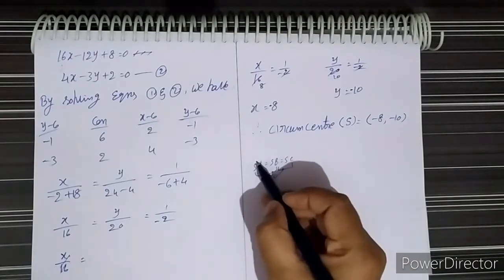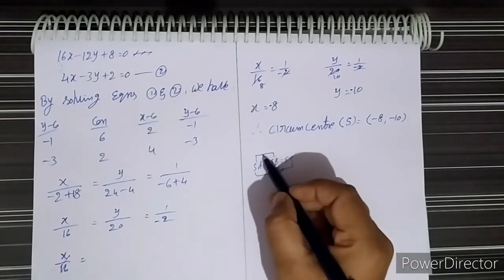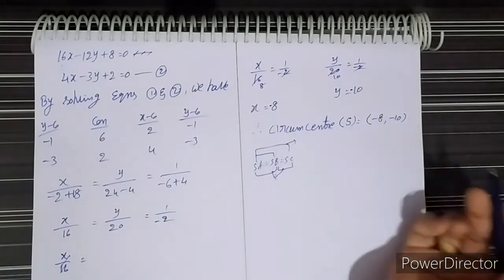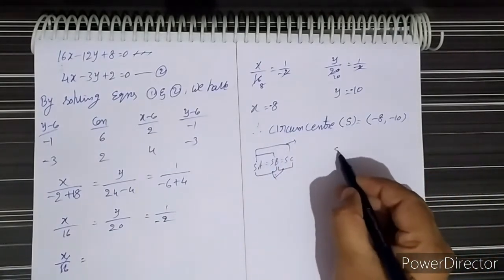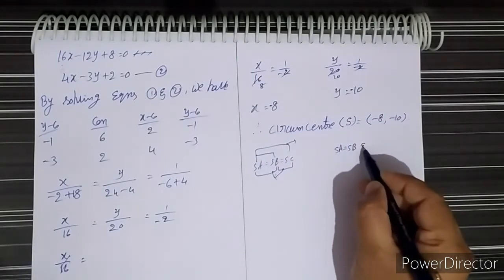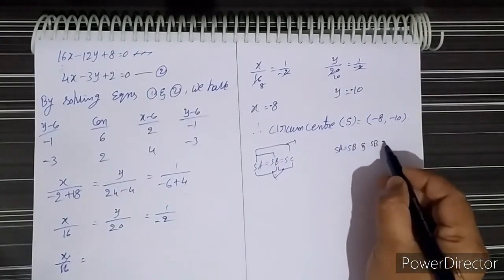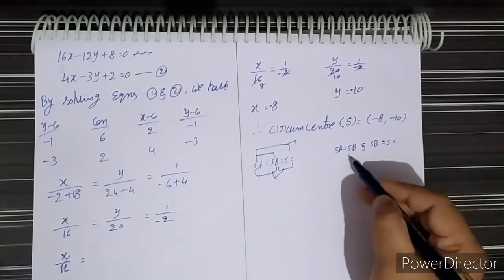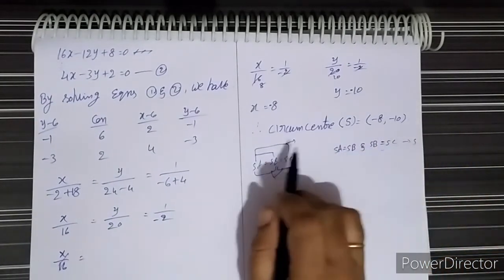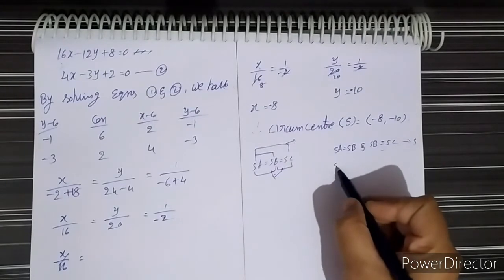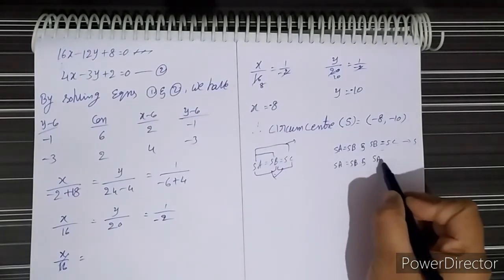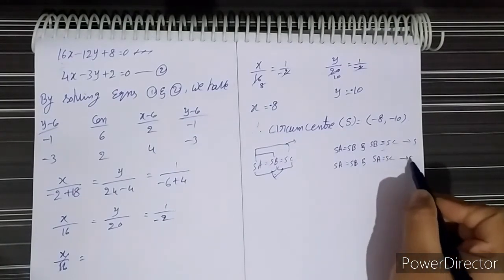We can also find the circumcenter using SA equal to SB and SA equal to SC equations. That means we can equate any two pairs: SA = SB and SB = SC, or SA = SB and SA = SC. Any two of these equations are sufficient to find the circumcenter, as we only need two equations.